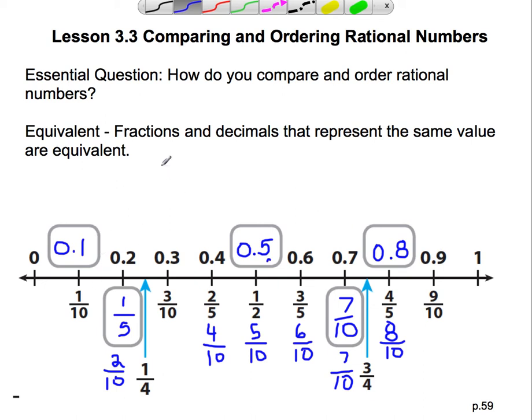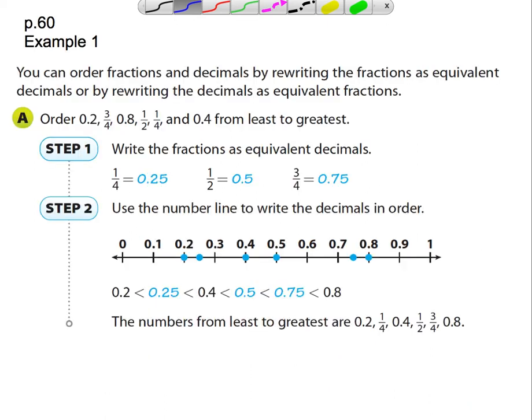We need to know this in order to move on to the next section. The next section is an example in the book — page 60. So if you want to turn to Lesson 3.3 on page 60, you can follow along. It says that you can order fractions and decimals by rewriting the fractions as equivalent decimals.